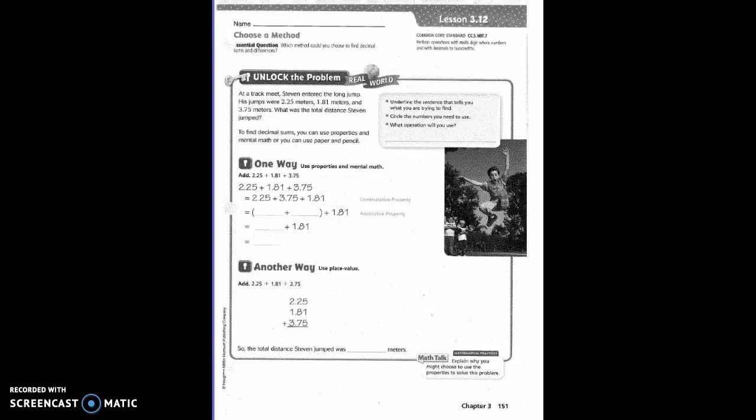Underline the sentence that tells you what you're trying to find. Circle the numbers you need to use. What numbers are we going to use? 2.25 meters, 1.81 meters, and 3.75 meters. What operation will you use? Are we going to add, subtract, multiply or divide? Add. So addition.